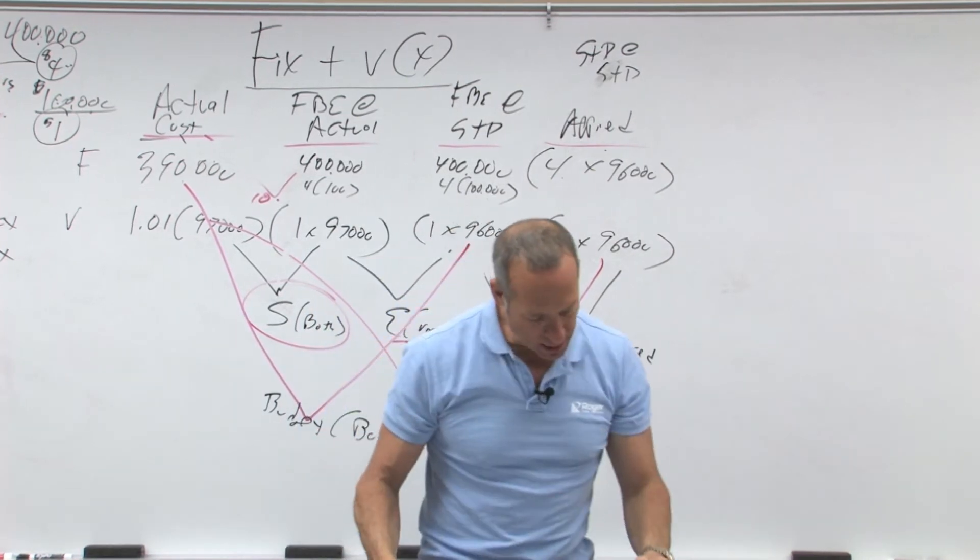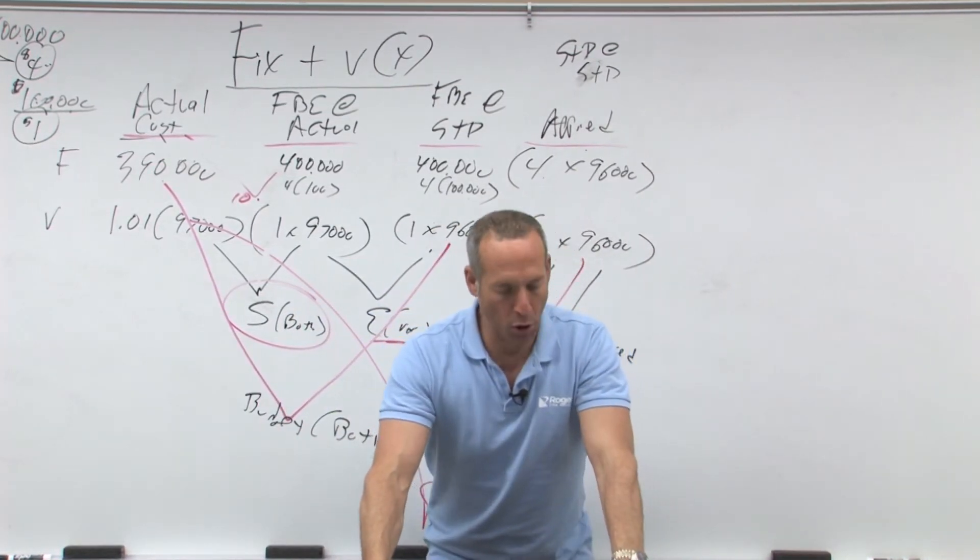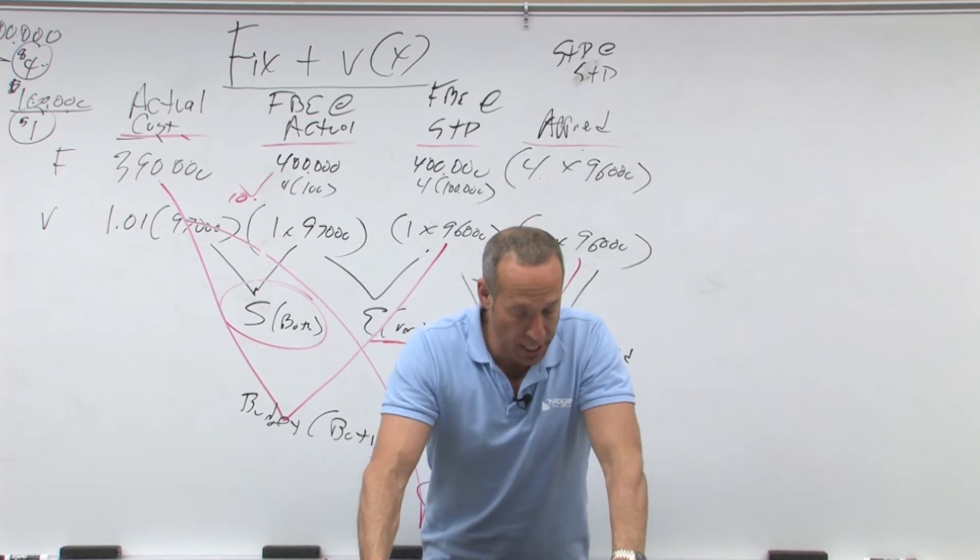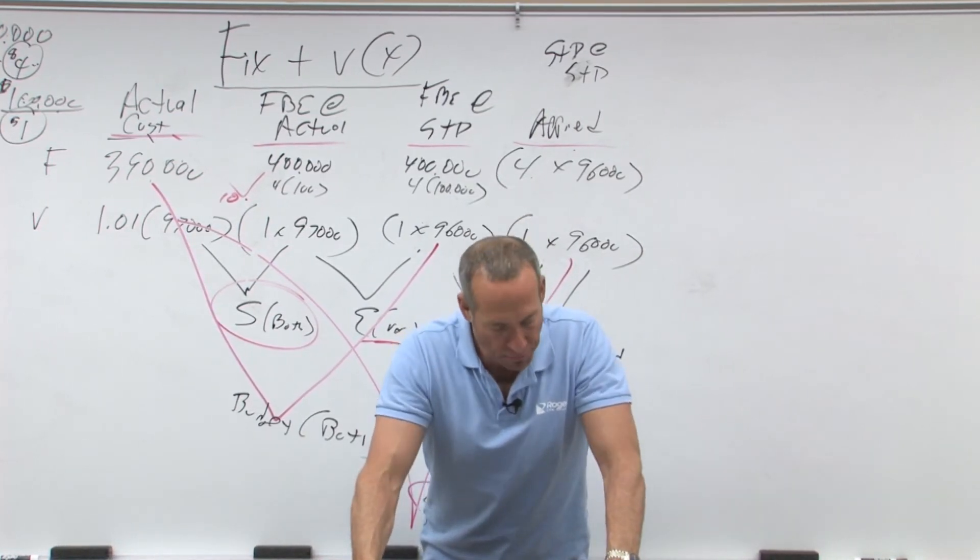Next paragraph. Many companies will further analyze overhead using a two, a three, or a four variance approach. The most common is three, dividing it into spending, efficiency, and volume.